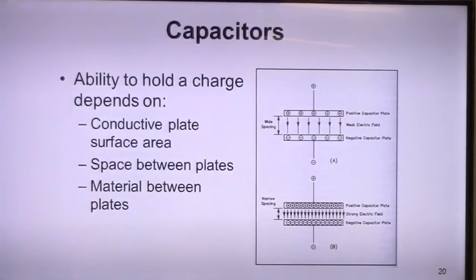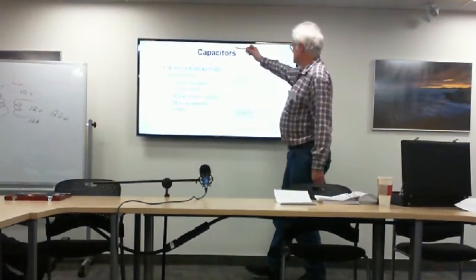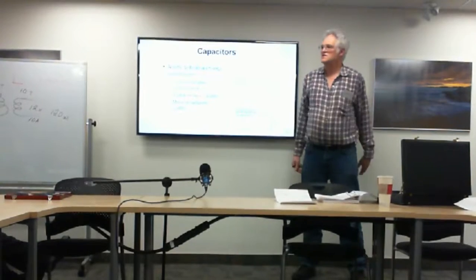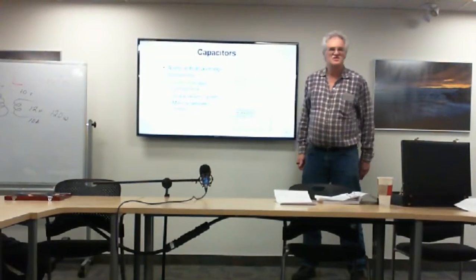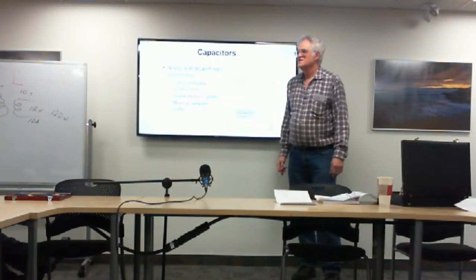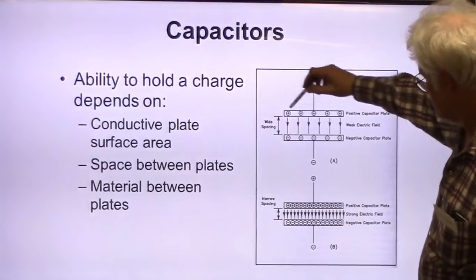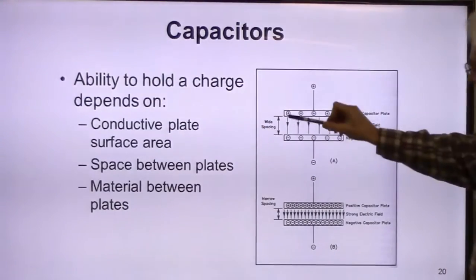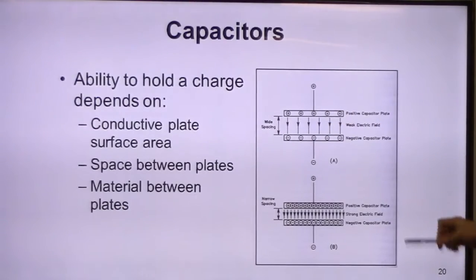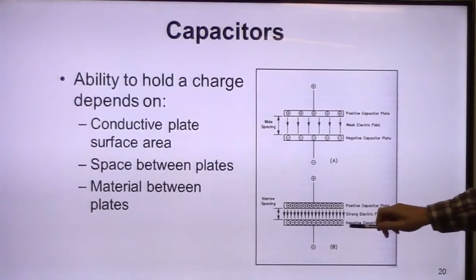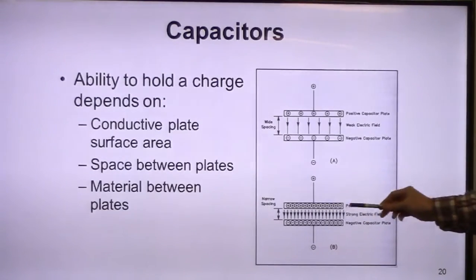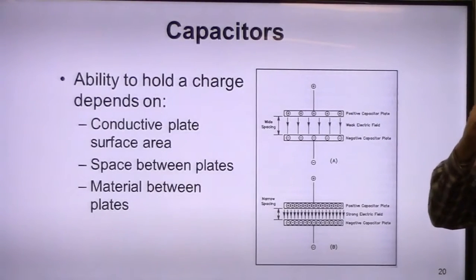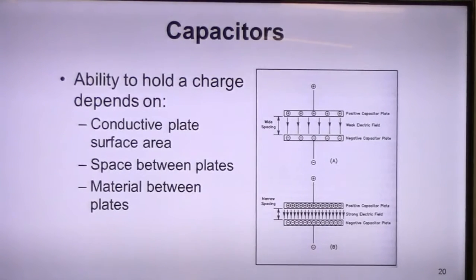Now, capacitors. Everyone has experienced the capacitor effect — like walking across a rug, building up a static charge, and getting a surge when you touch ground. To build a capacitor, we have two conductive surface areas — typically metal plates — with a space of some sort between them, which could be air, paper, or a chemical. We store the charge in a capacitor in the form of an electrostatic field — just like static electricity.